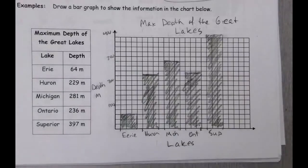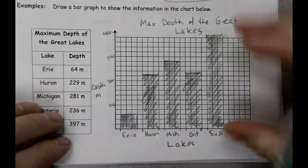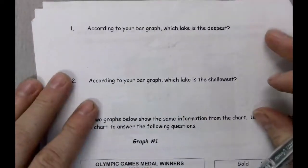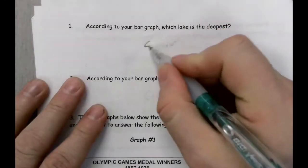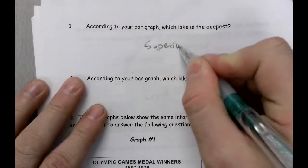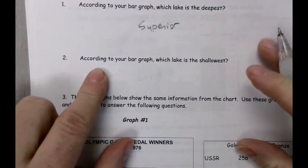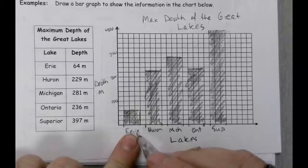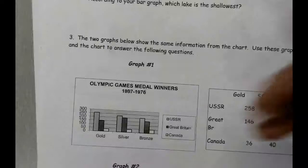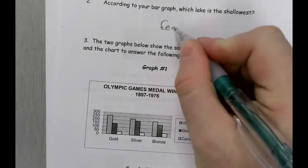So there are our Great Lakes and their depths. Now there are a couple questions based on this. According to your bar graph, which lake is the deepest? That was the last one we did — Lake Superior. And which lake is the shallowest? It's easy to see — clearly Erie is the shallowest of the lakes.